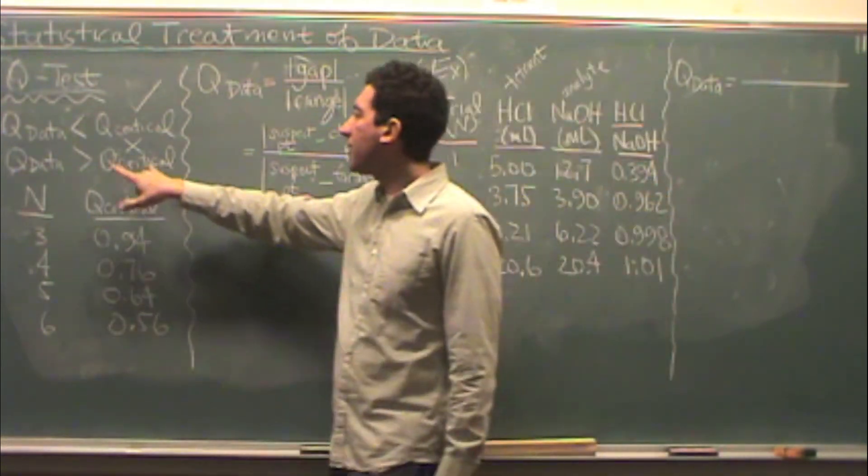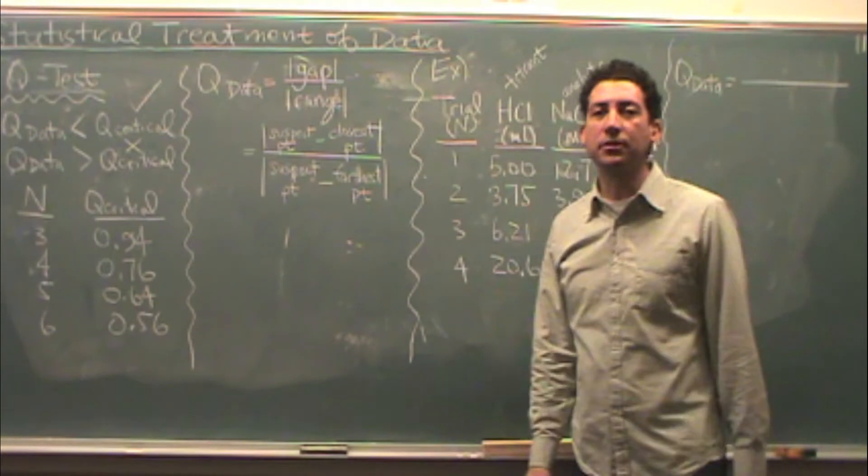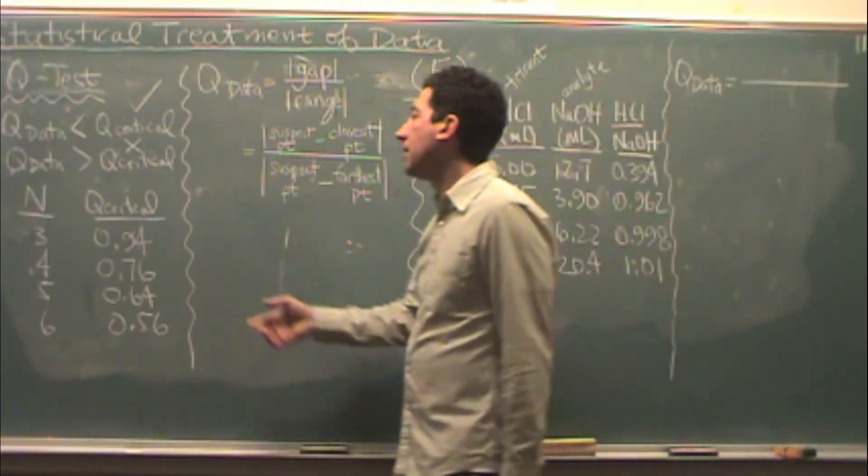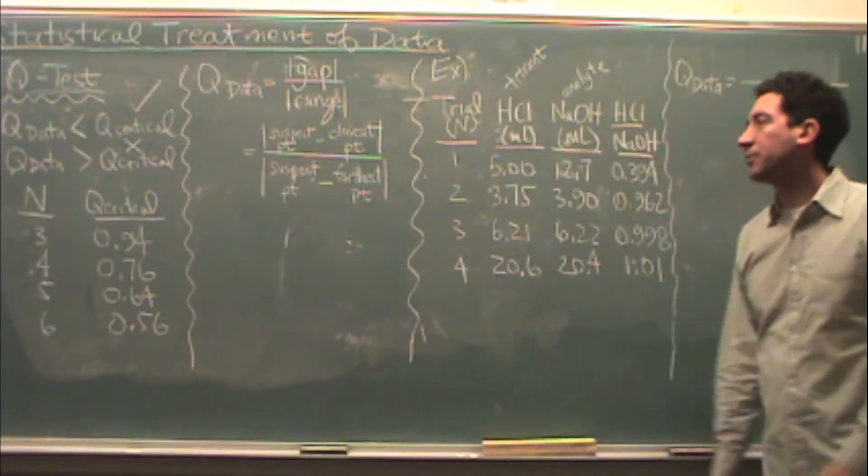You calculate that and compare Q data and Q critical. If Q data is smaller than Q critical, that's a good point. But if Q data is greater than Q critical, that's a point that should be thrown out.